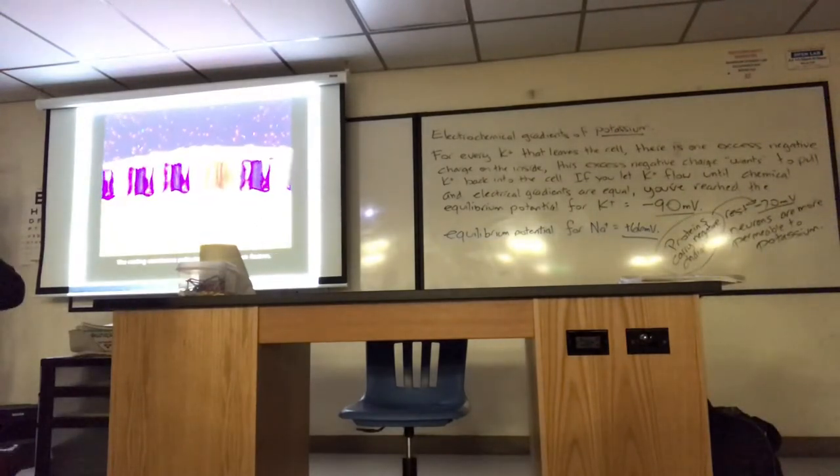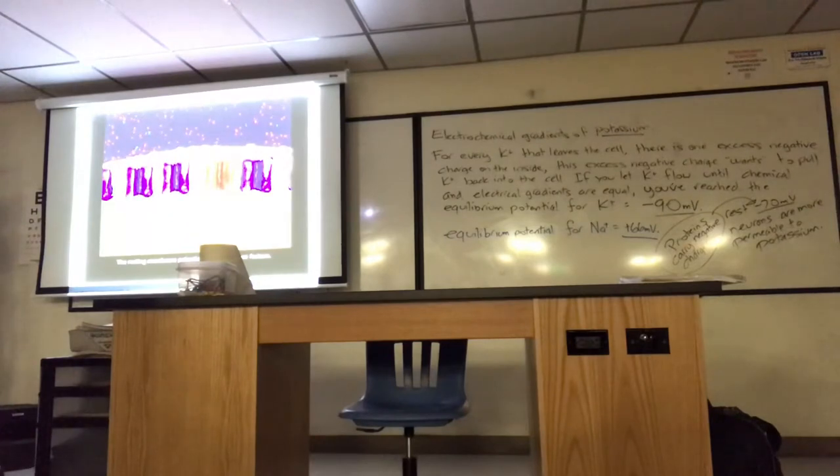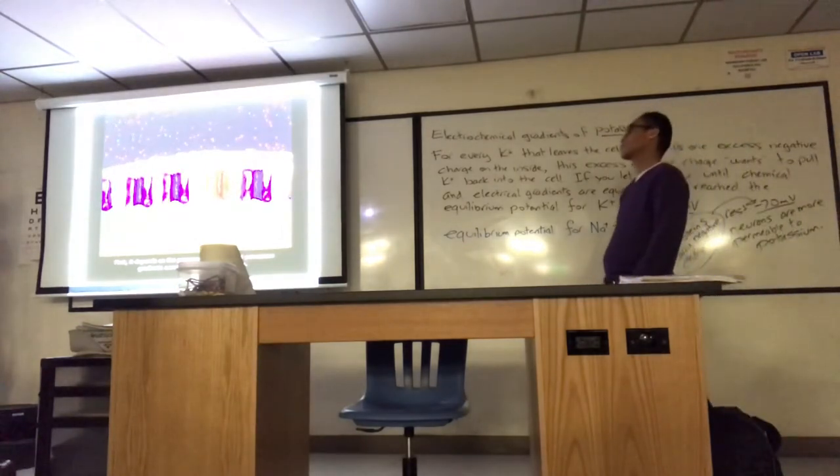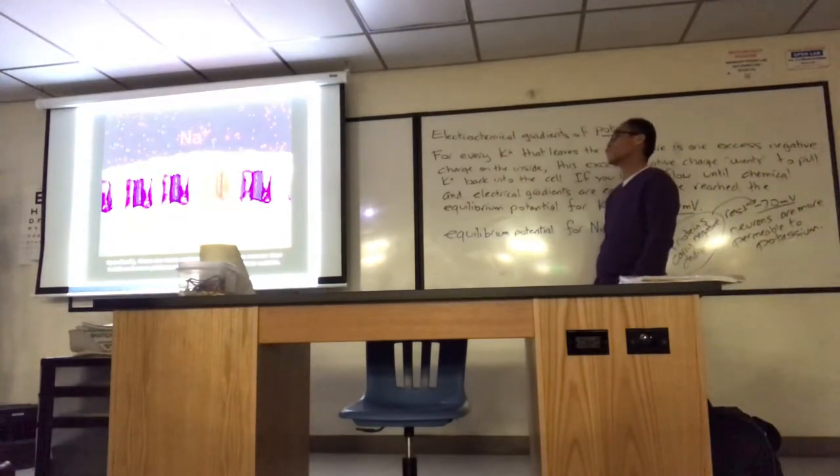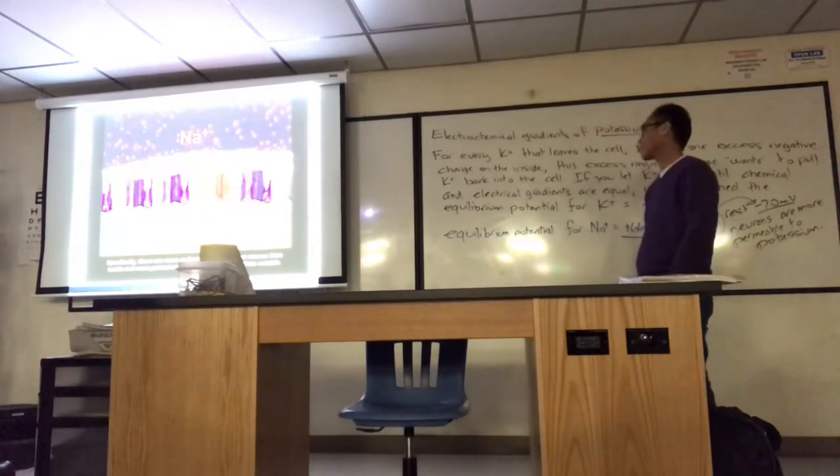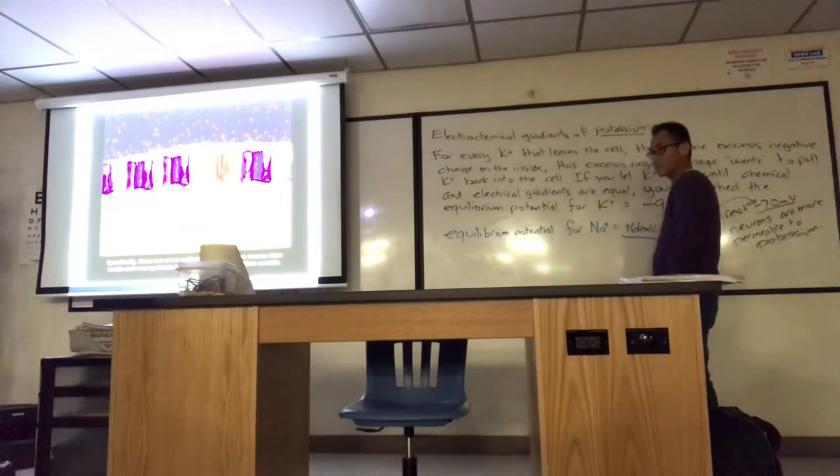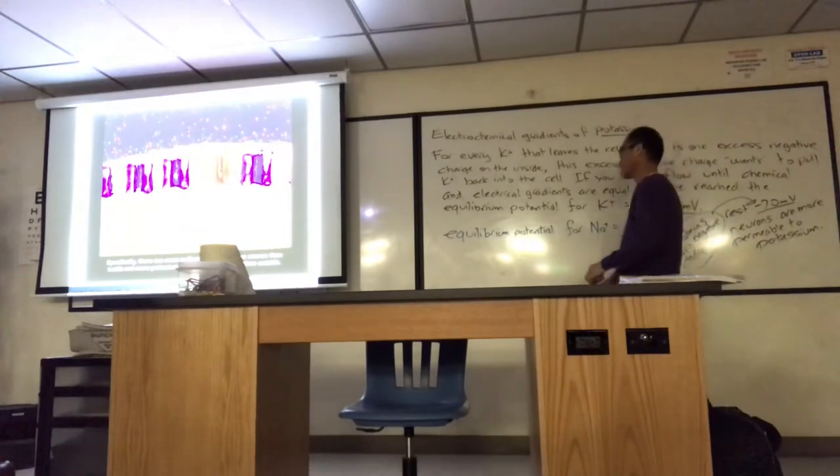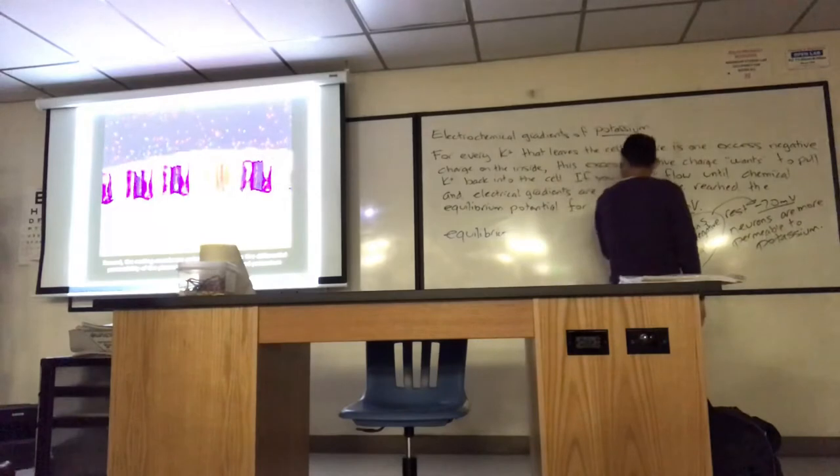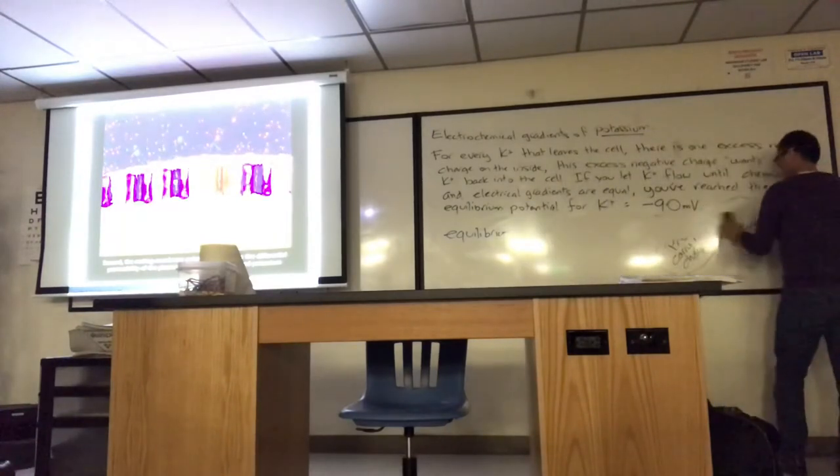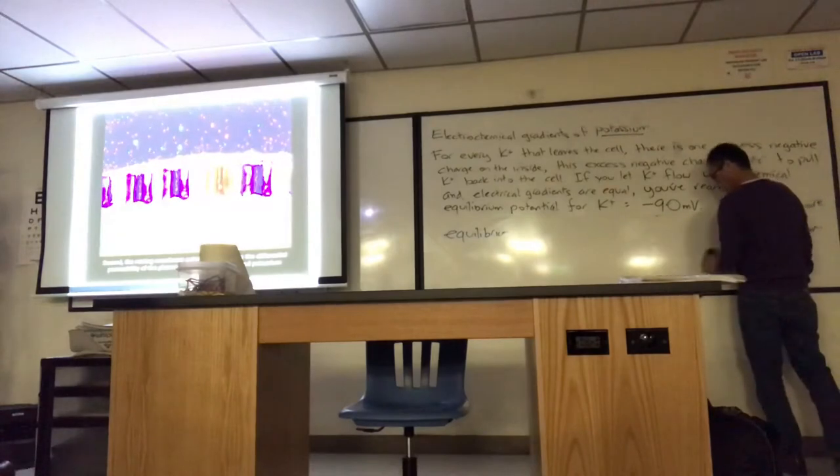The resting membrane potential depends on two factors. First, it depends on the presence of sodium and potassium gradients across the plasma membrane. Specifically, there are more sodium ions outside the neuron than inside, and more potassium ions inside the neuron than outside.